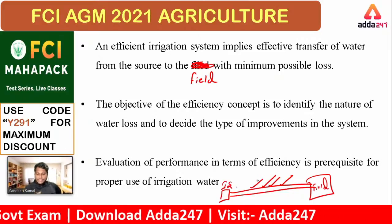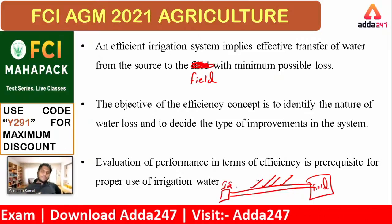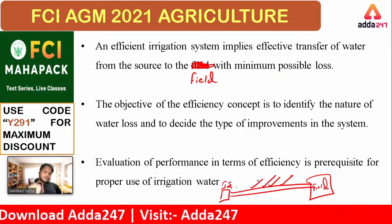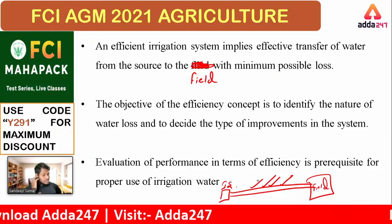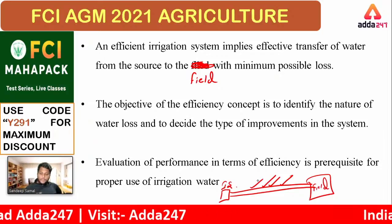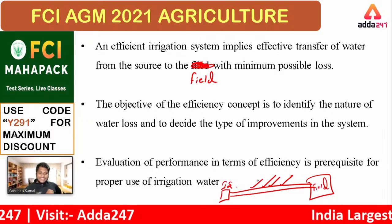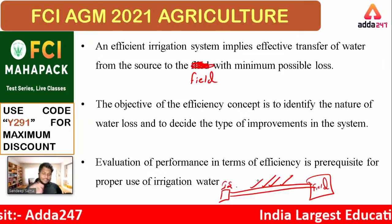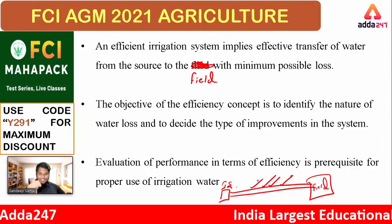Ramani mentions drip irrigation — we can adopt drip irrigation for the least possible loss of water. So this is about the irrigation system efficiency.